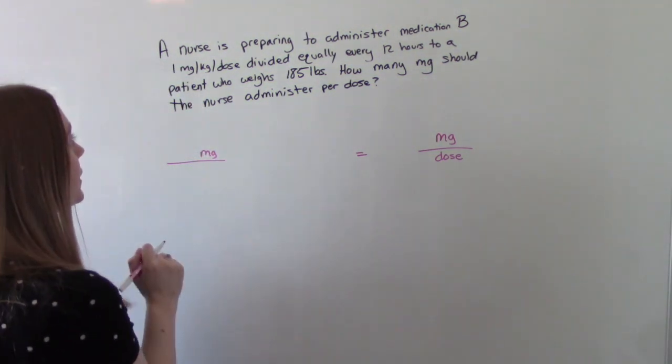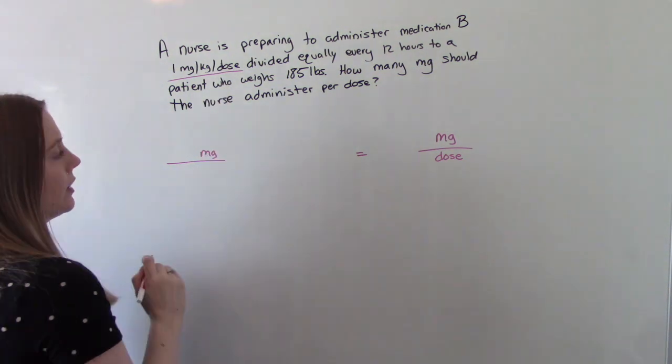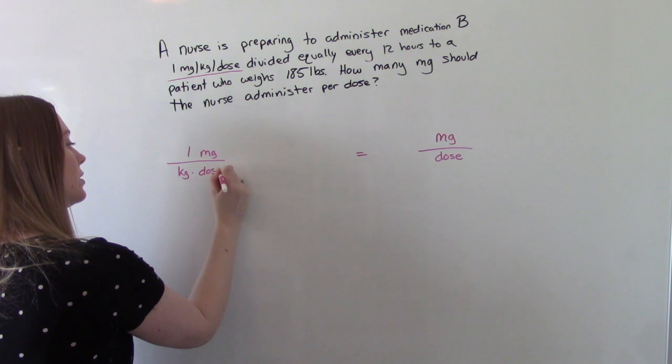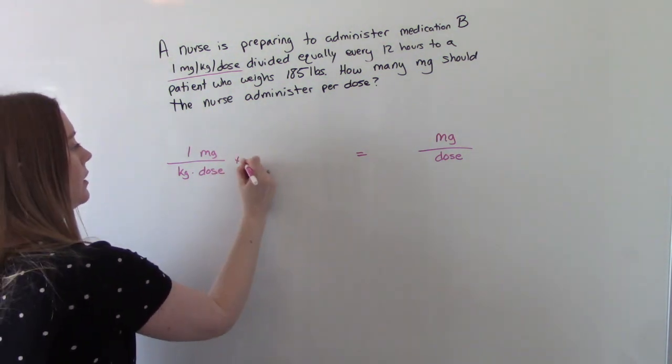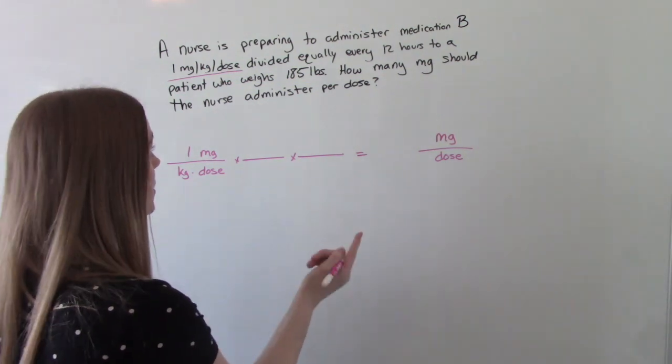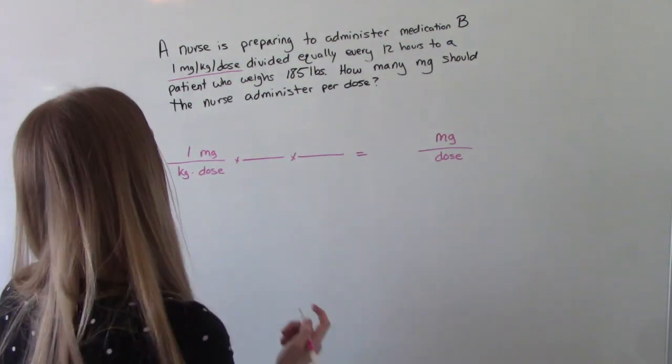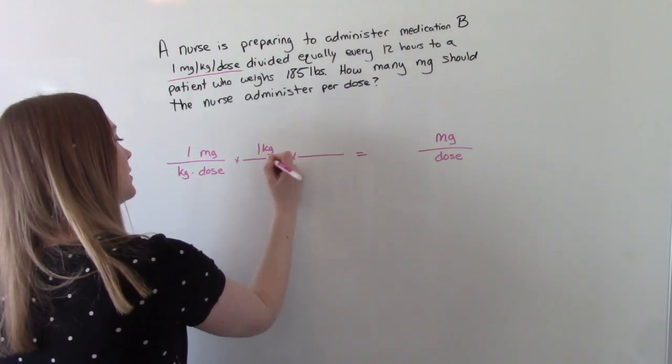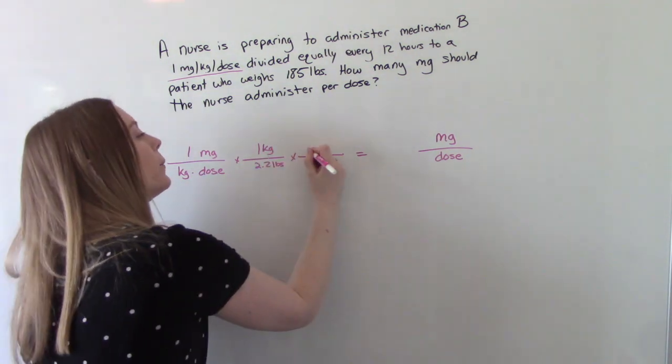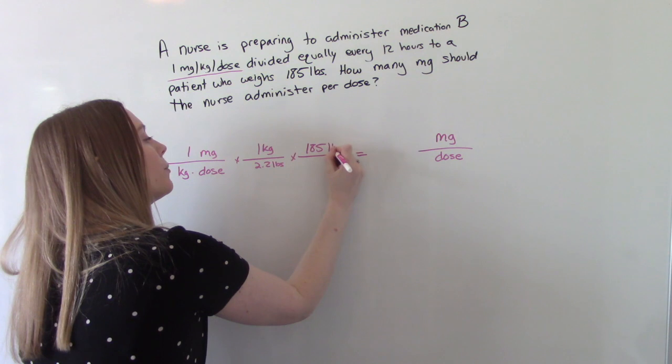So where do we see milligrams? Here. So 1 mg per kg per dose. We need to do a converting factor, because we don't have kilograms anywhere else. We have pounds. So 1 kg is 2.2 pounds, and then we have a 185-pound patient.